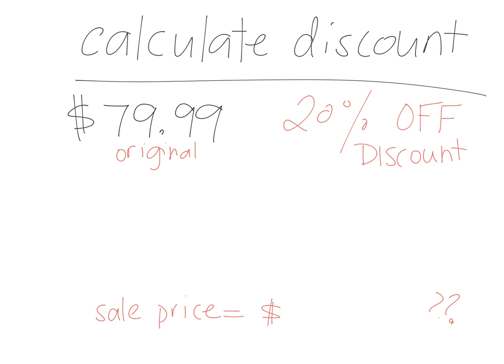First step: you need to figure out how much you're saving. Our discount is 20% off, so we need to figure out what is 20% of the original price. How much money am I going to save? How do you calculate the percent of a number? What do I need to do with this 20%?